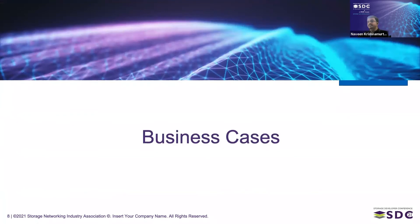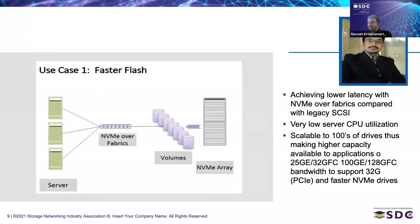Now let's look at some business use cases with NVMe. The first use case is faster flash, where compute is connected to an NVMe storage array through a fabric interconnect — FC, TCP, or RDMA. This achieves lower latency with NVMe fabric compared to SCSI, with savings on both the host and target sides, and very low host server CPU utilization. On the target side, it scales to hundreds of devices, making higher capacity available to applications with 25, 32, and 100 gig bandwidth support.